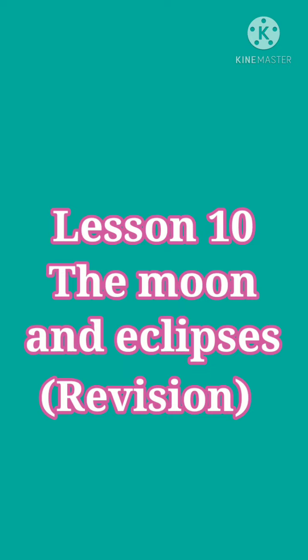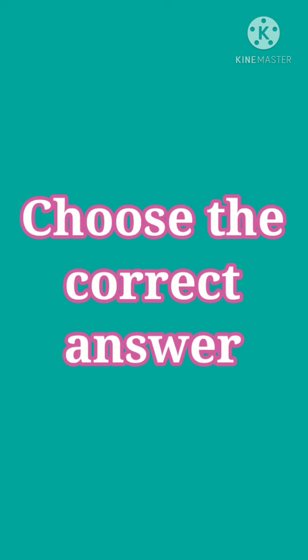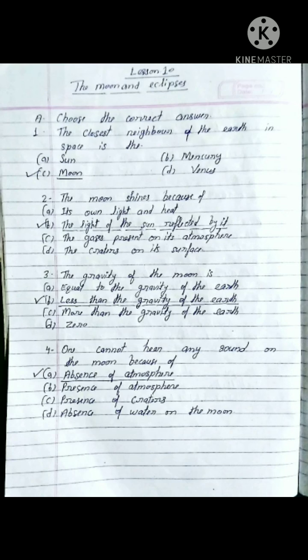Question number one: The closest neighbor of the Earth in space is — option A: Sun, option B: Mercury, option C: Moon, option D: Venus. Option C is correct — Moon. The closest neighbor of the Earth in space is the Moon.